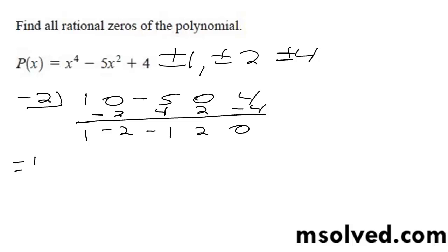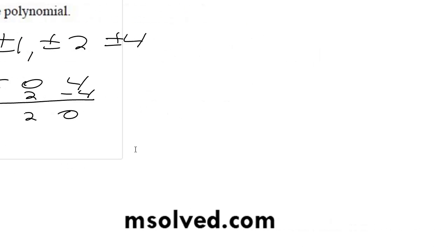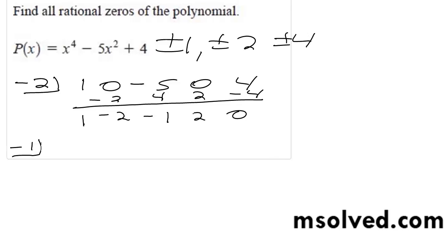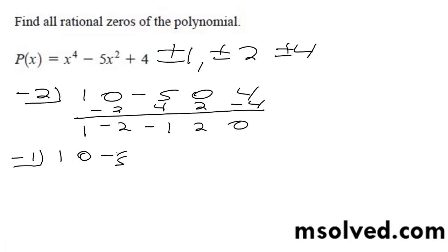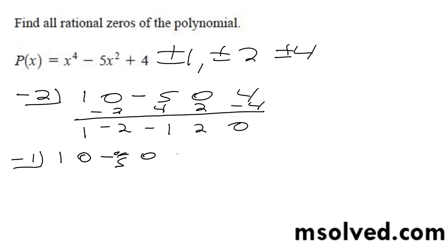Let's try negative 1. Gives me negative 4, gives me 4, negative 4, 0, so that works for 2.